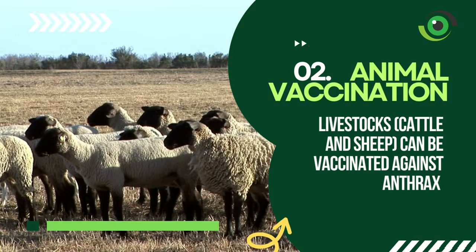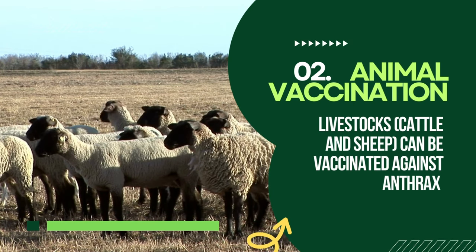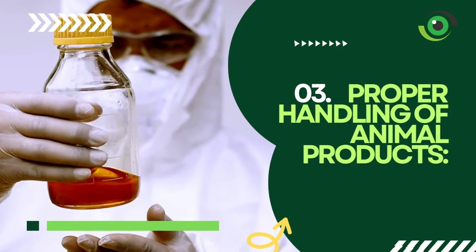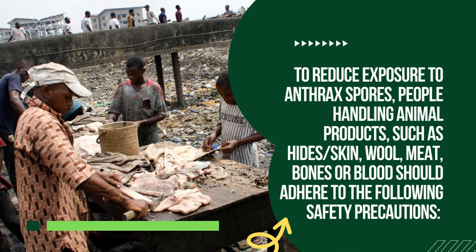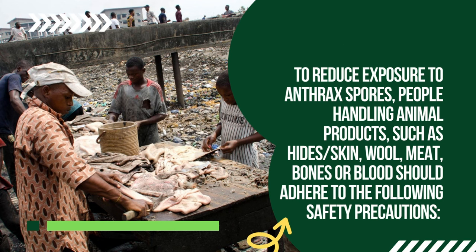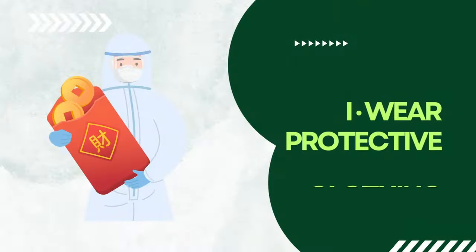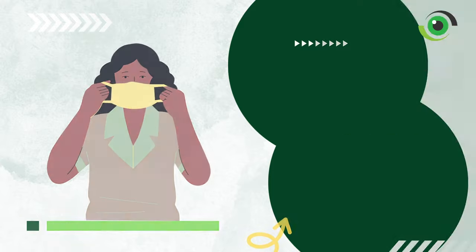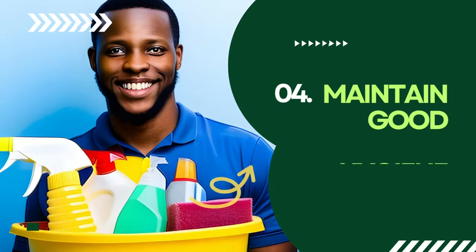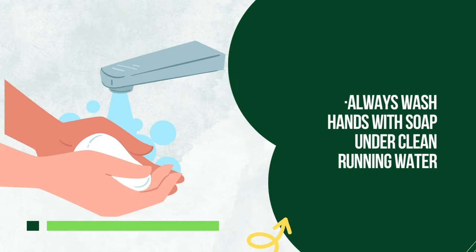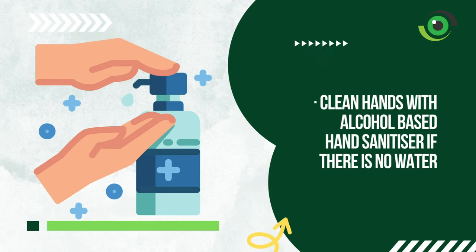Animal vaccination — cattle and sheep can be vaccinated against anthrax. Proper handling of animal products is important to reduce exposure to anthrax spores. People handling animal products such as hides or skin, wool, meat, bones or blood should wear protective clothing, wear gloves, wear face masks, and ensure proper workplace sanitation.